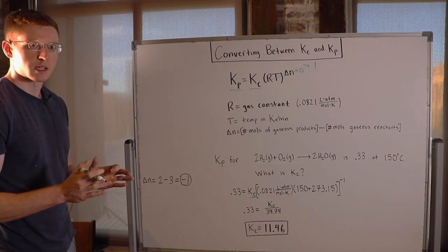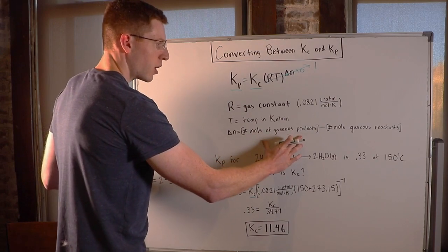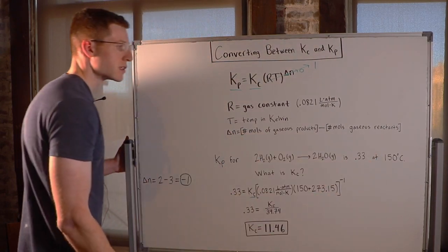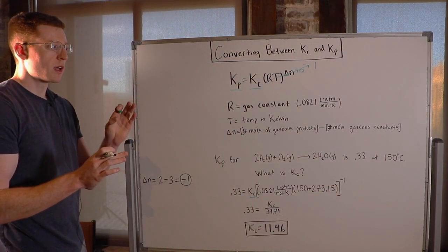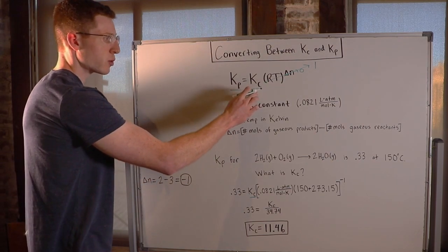And what does it mean for delta N to be zero? Well, that means we have the same number of moles of gaseous products as we do gaseous reactants. So when you have the same number of moles on the reactant side as you do on the product side, Kp equals Kc.